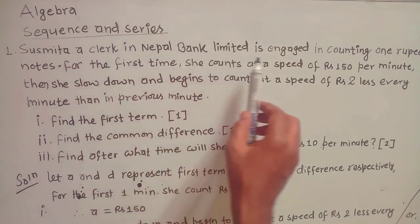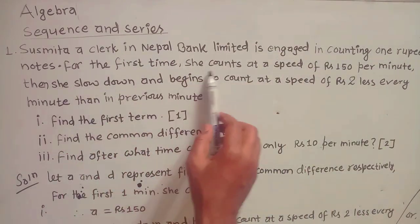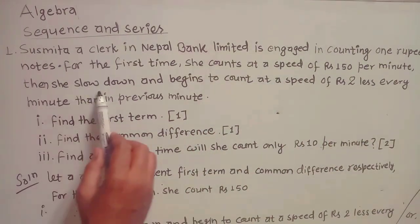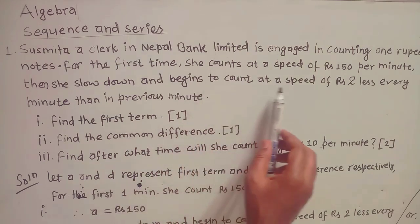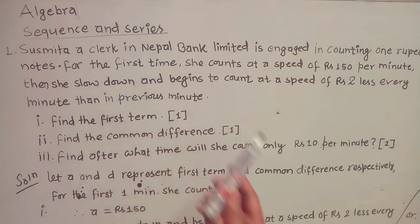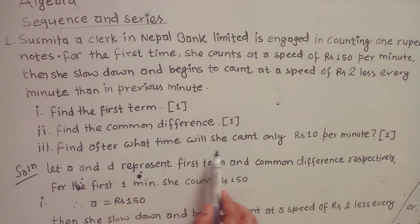The first question: Sushmita, a clerk in Nepal Bank Limited, is engaged in counting one rupee notes. For the first time she counts at the speed of Rs 150 per minute. Then she slows down and begins to count at a speed of Rs 2 less every minute than in previous minute. Find the first term, find the common difference, and find after what time she will count only Rs 10 per minute.